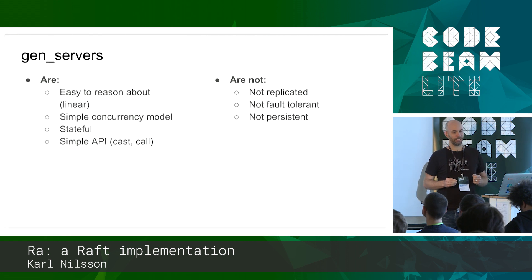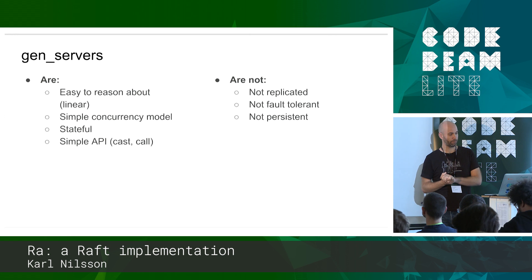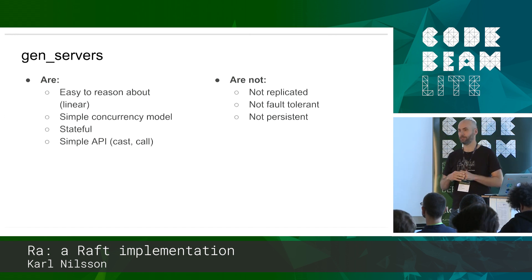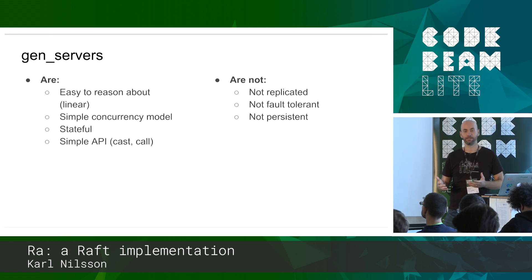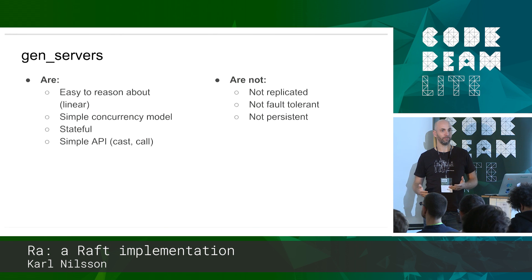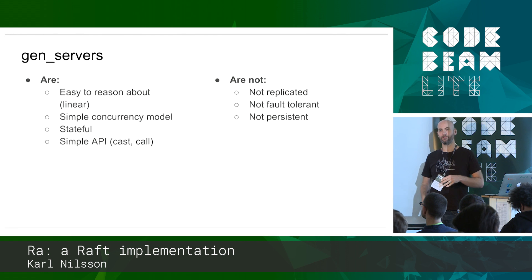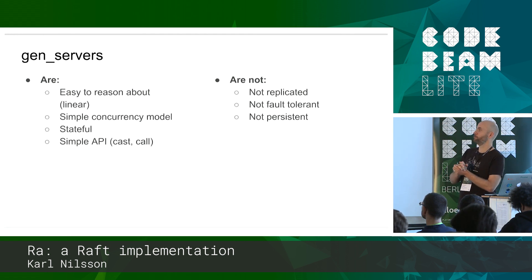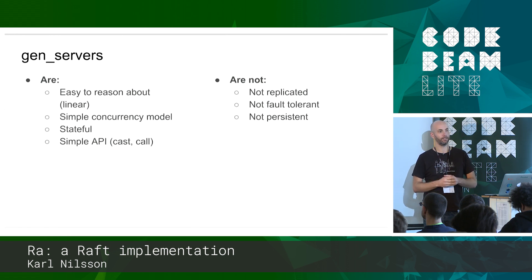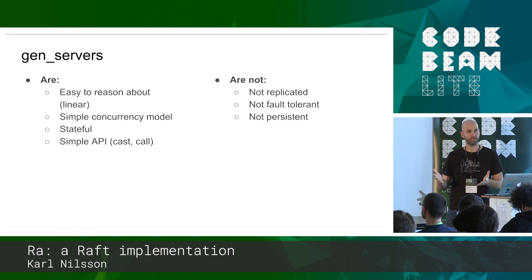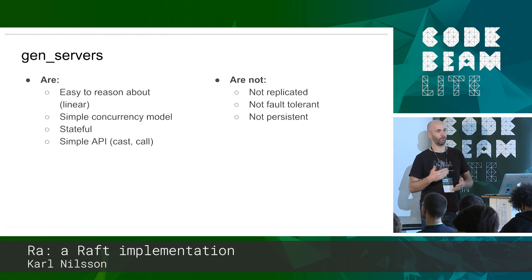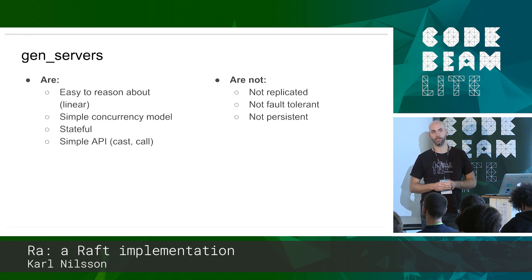First I would like to talk about GenServers. I'm sure you've heard of them. There are many things that are good about GenServers. They are very easy to reason about because they provide you with this simple concurrency model. Messages come in, you process them one by one in order, typically unless you've got some funky GenServers going on. They're stateful, so you can maintain state, change state, and they've got a very simple API. You typically wrap it around one of two options: either cast, or you call synchronously into the GenServer and get a reply.